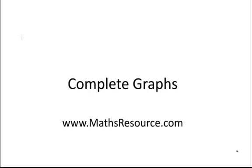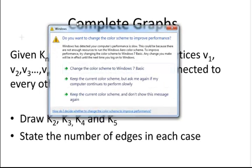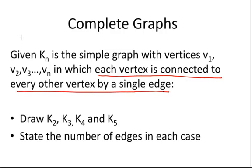In this presentation we are going to look at complete graphs. This is a subject matter within graph theory. Given K_n is the simple graph of vertices v1, v2, v3, all the way to v_n, in which each vertex is connected to every other vertex by a single edge. That's the key definition. Each vertex is connected to every other vertex by a single edge.